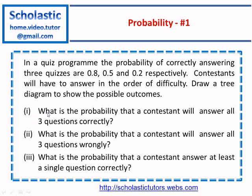First question: what is the probability that a contestant will answer all three questions correctly? Second question: what is the probability that a contestant will answer all three questions wrongly? Thirdly: what is the probability that a contestant answers at least a single question correctly? So the first task is to draw a tree diagram, and then let's look at the remaining three questions.